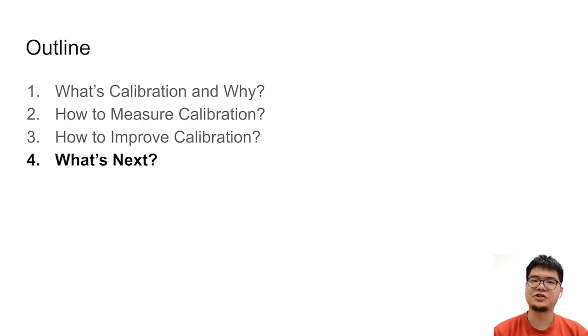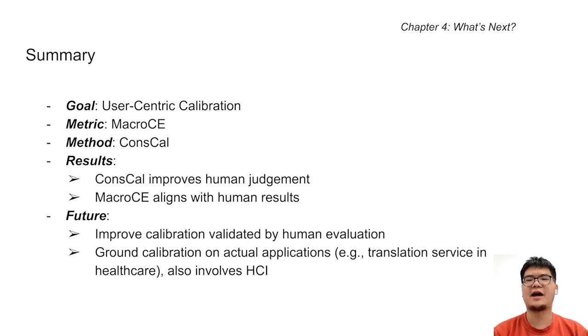In conclusion, in this work, we put forth the idea of user-centric calibration, and proposed to use the micro-CE metric and the ConsCal calibration method. Human evaluation results verify that micro-CE aligns with human preference, and ConsCal best improves human judgment.